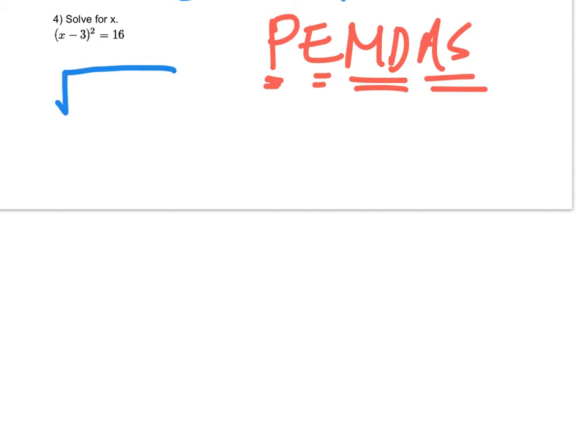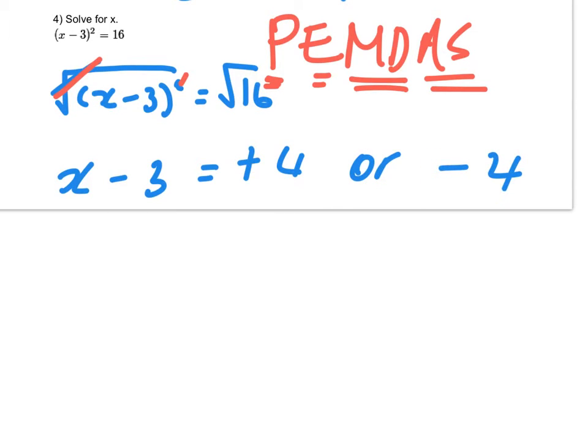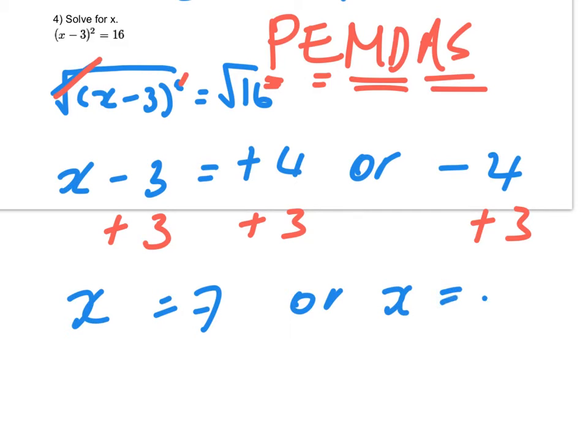So we're going to get the square root of x minus 3 squared equals the square root of 16. So the square root and the square cancel. So you're left with x minus 3 equals, well, the square root of 16 is plus 4 or minus 4. So then to finish it off, you have to add 3. So x is equal to 7 or x is equal to minus 1.